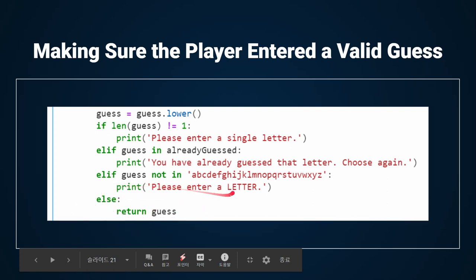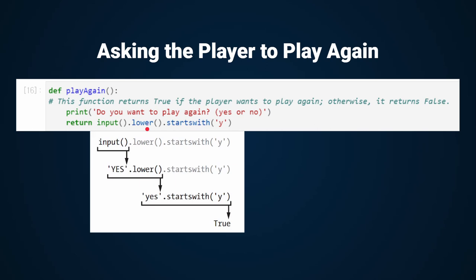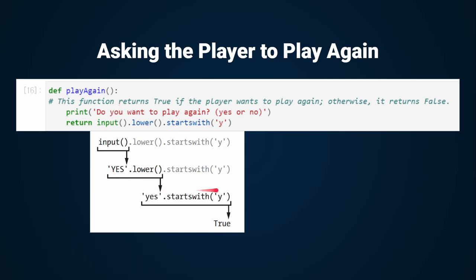What if you just finished playing the game? Wouldn't it be better if the computer asked the player to play again? The play_again function has just a print function call and a return statement. The return statement evaluates: first, an input blank asks the user for an answer. If the user types 'yes', whether capitalized or not, it converts to lowercase 'yes'. Then the startswith function checks if that response starts with 'y'. If true, the player will play the game again. Most positive expressions start with y — such as 'yeah' or 'yes'.